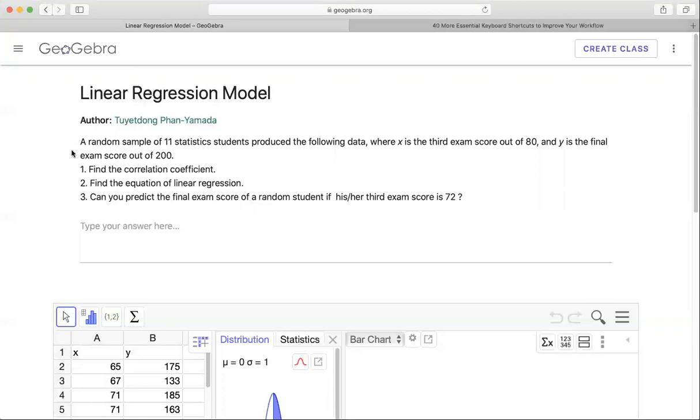An example for this topic. A random sample of 11 statistic students produced the following data. X is the third exam score out of 80, and Y is the final exam score out of 200. Can you find the correlation coefficient of the two data sets to see if there is any relationship between the third exam and the final exam?